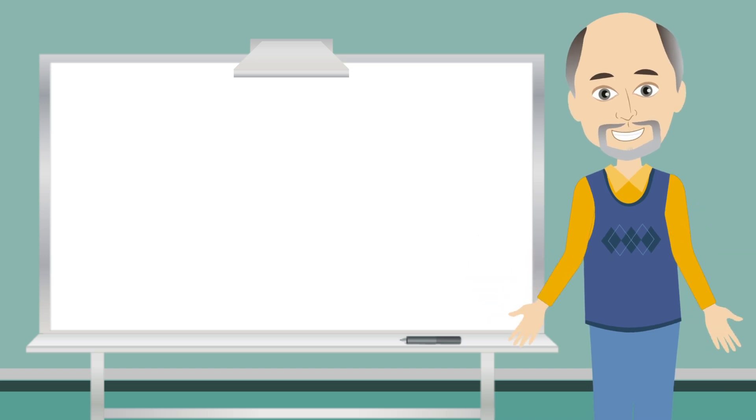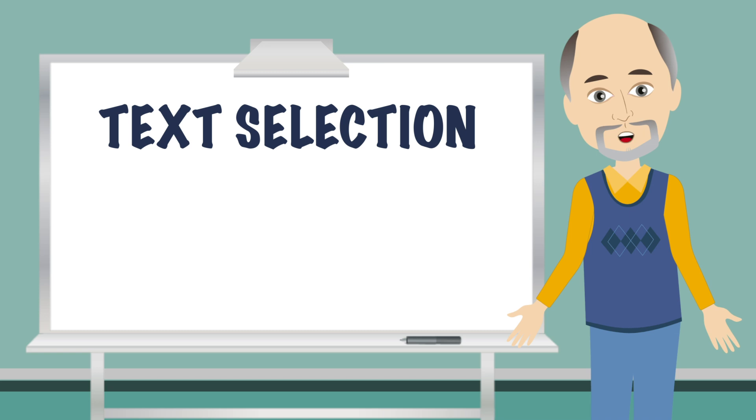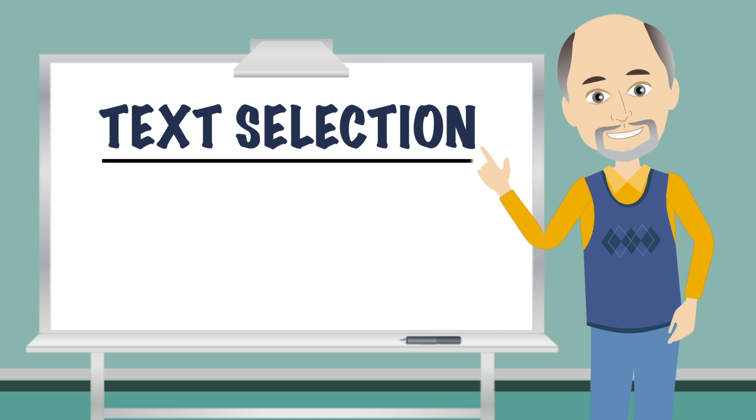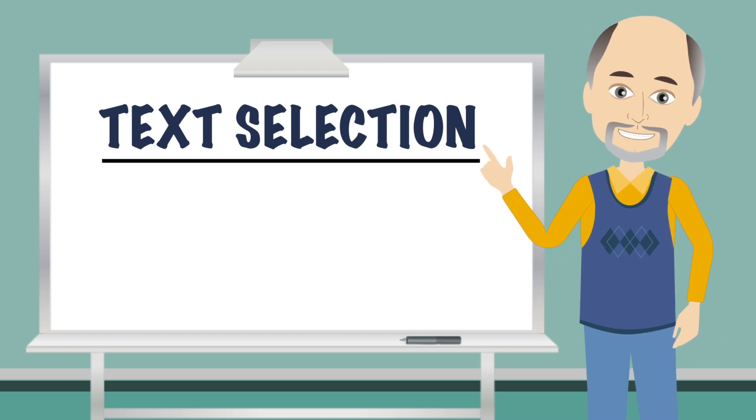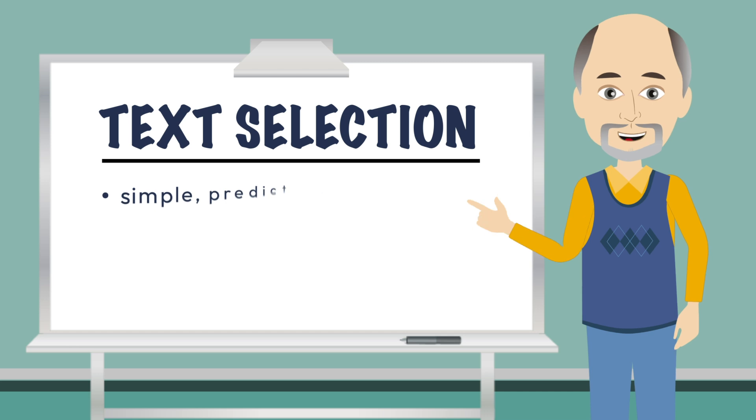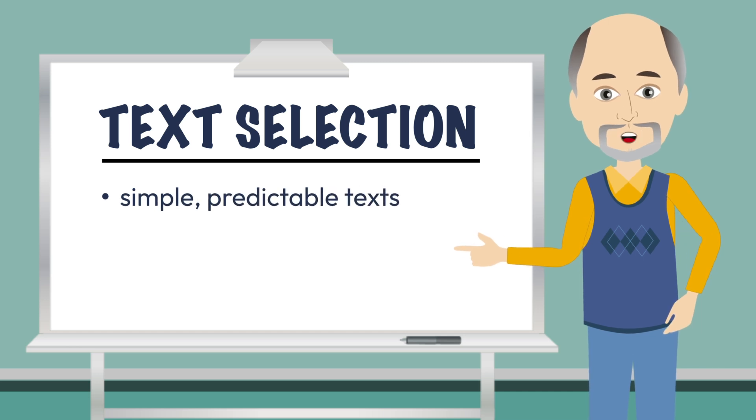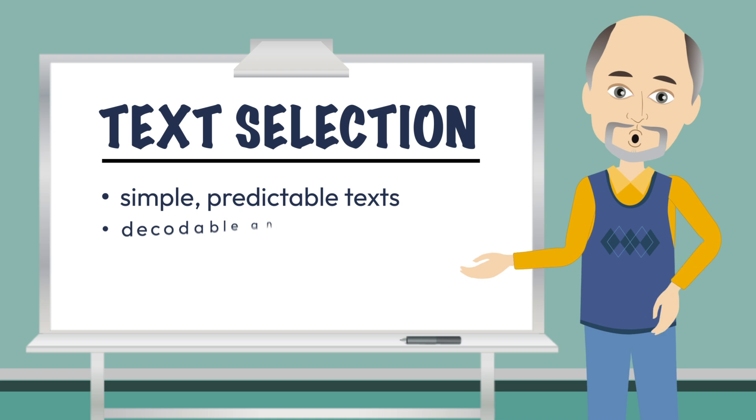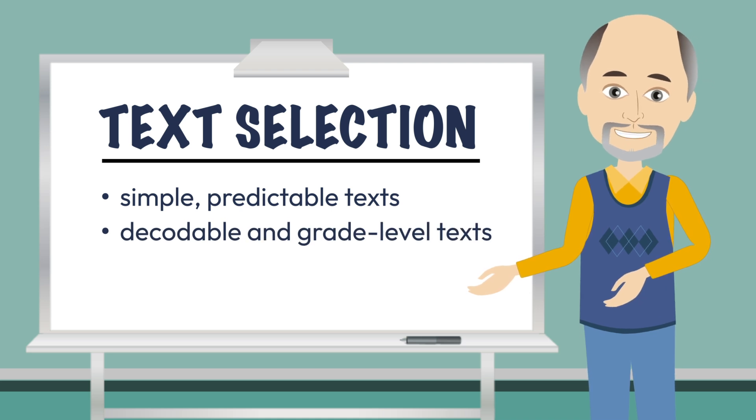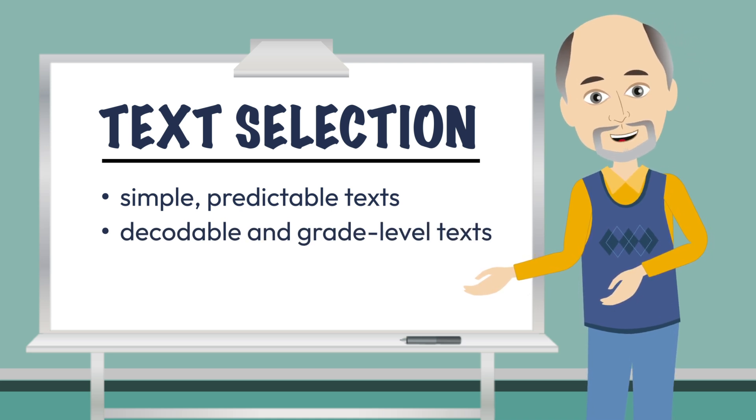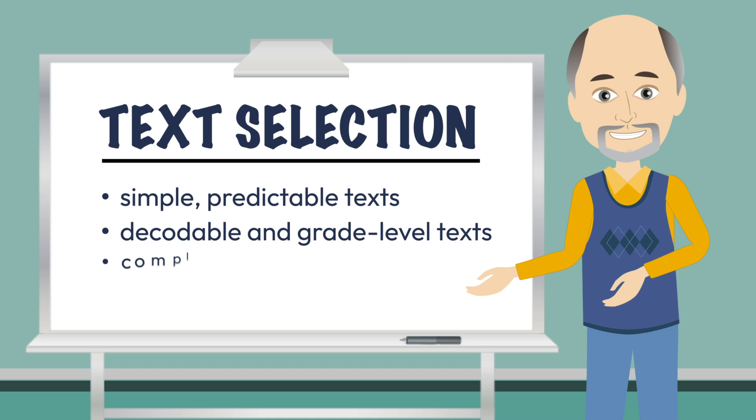Once students are reading connected texts, it is important that the right texts are selected for fluency development. In the earliest stages, text fluency should focus on simple predictable texts such as nursery rhymes, songs, and student-written texts, then move into decodable and grade-level texts.